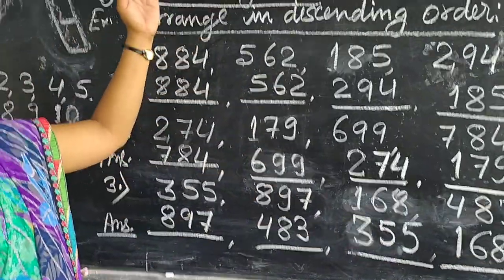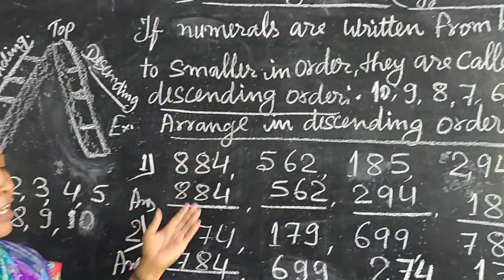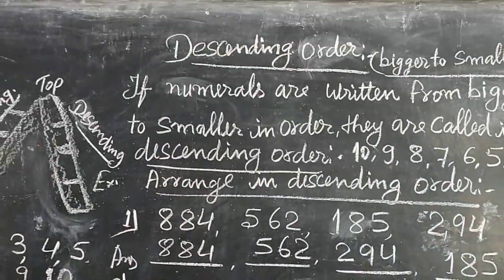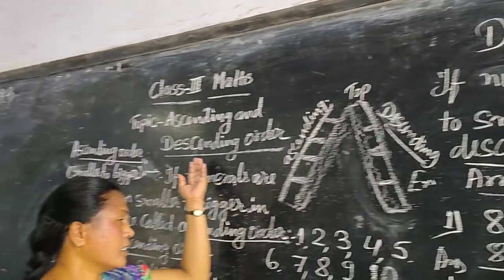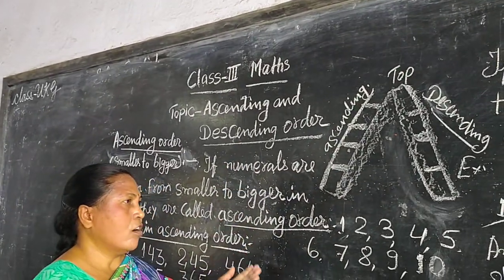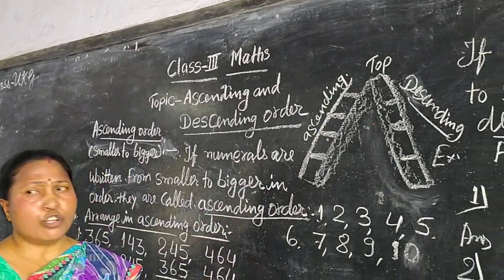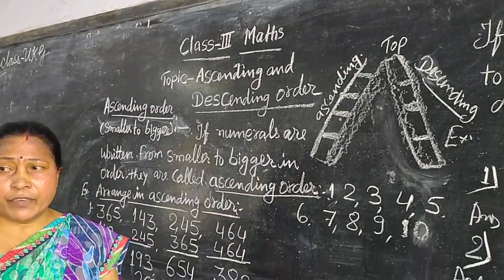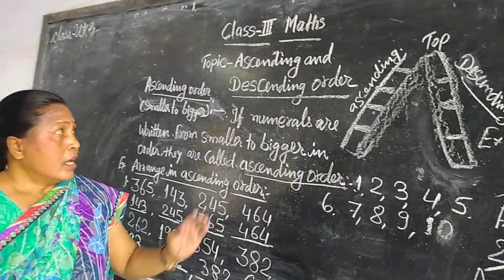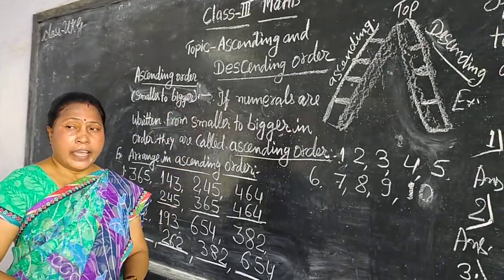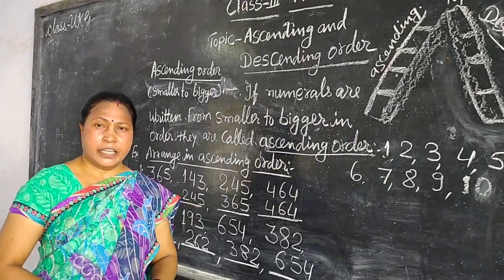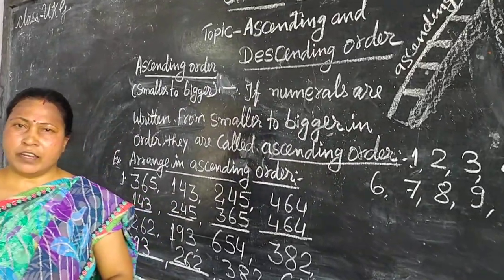And 168. So this is descending order. I hope you remember ascending order and descending order. Thank you.